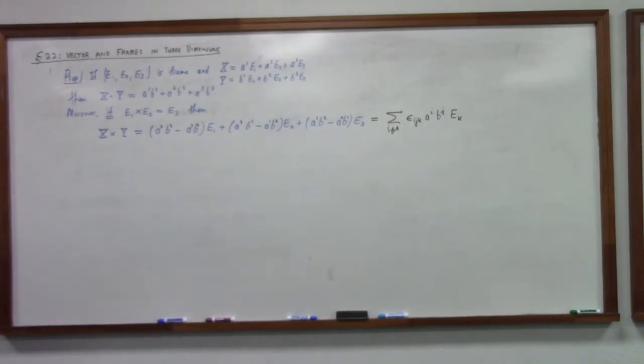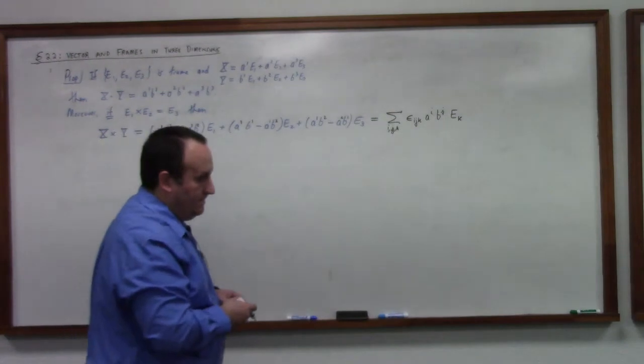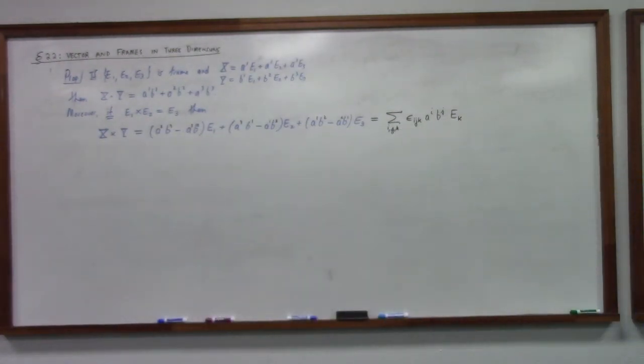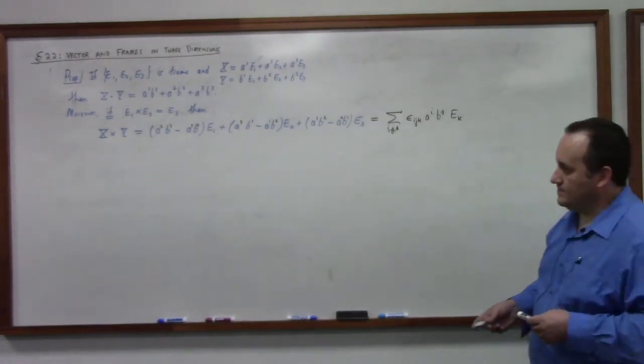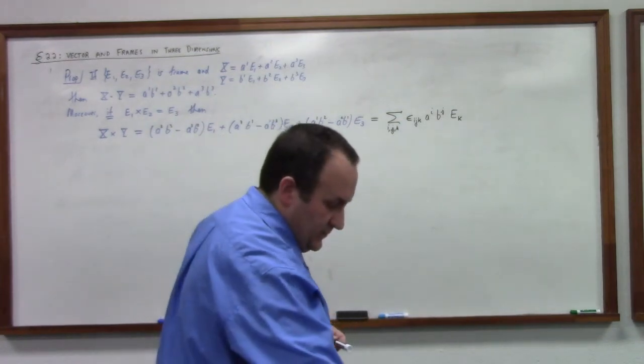But the point is, dot products and cross products in an orthonormal frame, guess what, work just the same as usual, as long as you keep track of the orthonormal frame components as opposed to the standard components. Right. Now the proof of this proposition is the one I was mistakenly starting into about 15 minutes ago or so.